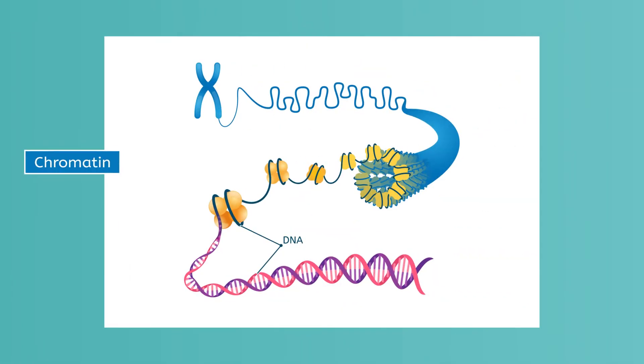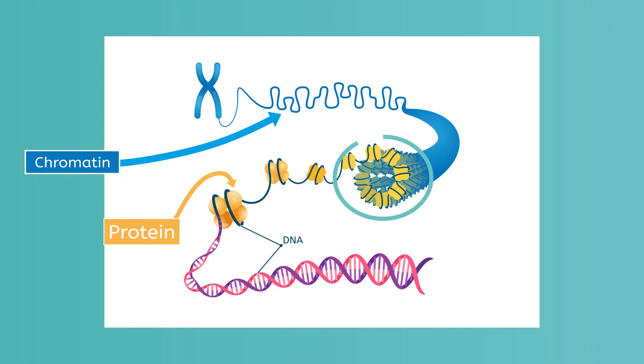Now, if you needed instructions on how to build something and your instruction book had billions of pages, you'd never get anything done. Luckily for us, our DNA has an incredible organization system that helps our cells stay on track. For starters, DNA is integrated into chromatin, which is a thread-like structure made out of proteins called histones and DNA. The protein helps pack the DNA so that it can be neatly folded and made available when it is needed by the cell.